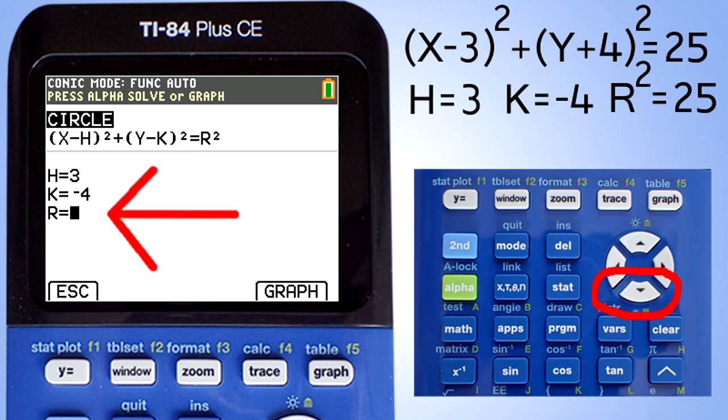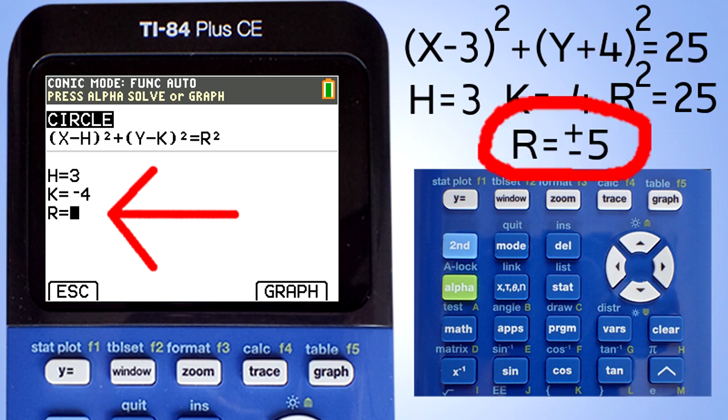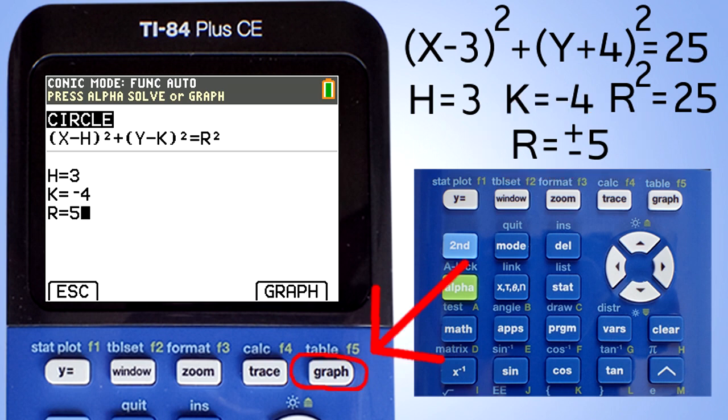Go down to R. Now R² equals 25. Let's take the square root of both sides and R equals plus or minus 5. Enter a positive 5 for R. Now press this Graph button here to graph the circle.